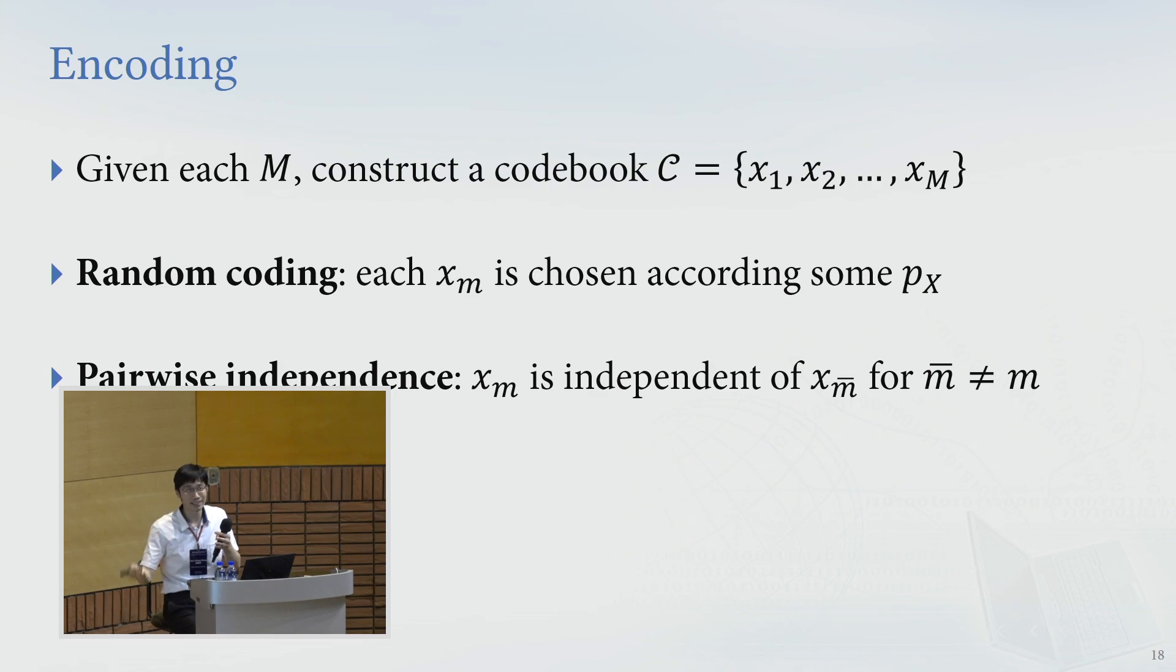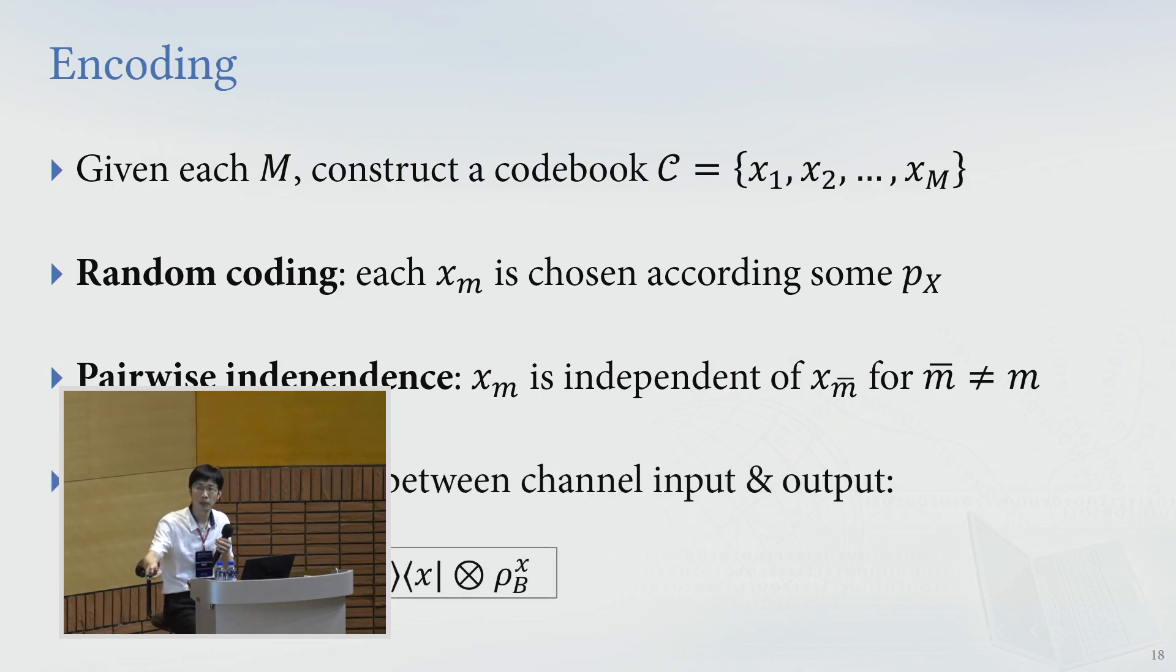Then given a random coding and some probability distribution, then the joint distribution between channel input and output is like this, joint CQ state. Then the marginal at the channel output, it's just that you trace out the input distribution, you'll get the average channel output. We'll see this shortly. Actually the encoder is just a classical encoder used by Shannon long time ago.